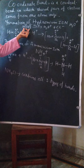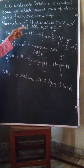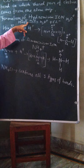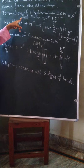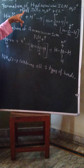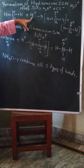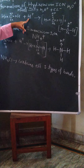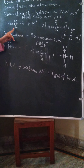Before discussing the formation of the coordinate bond, we have to see HCl. HCl shows a covalent bond and it is a polar covalent compound, in which hydrogen has a partial positive charge and chlorine has a partial negative charge. When H+ separates from HCl due to the high electronegativity of chlorine, H+ will have no electrons.